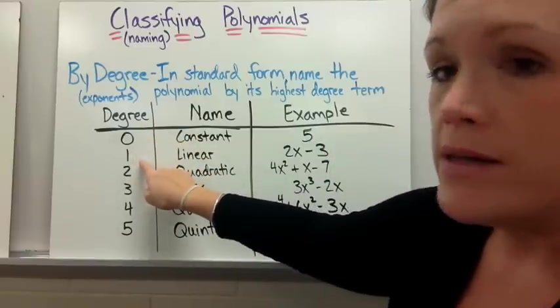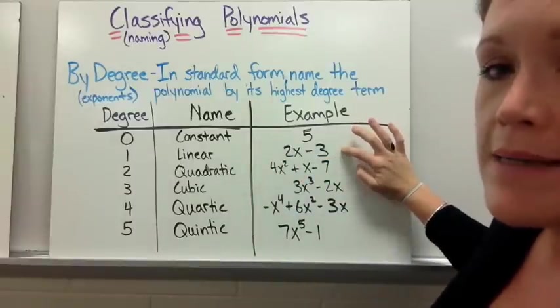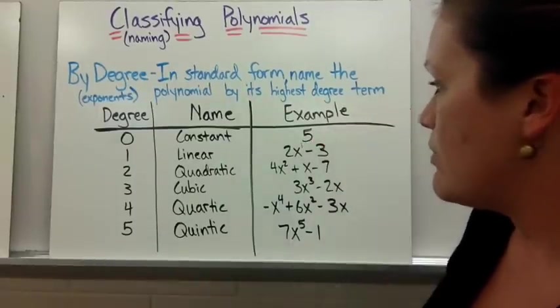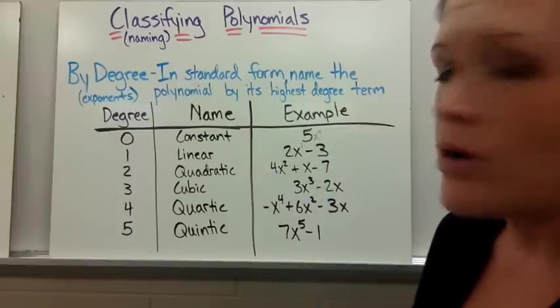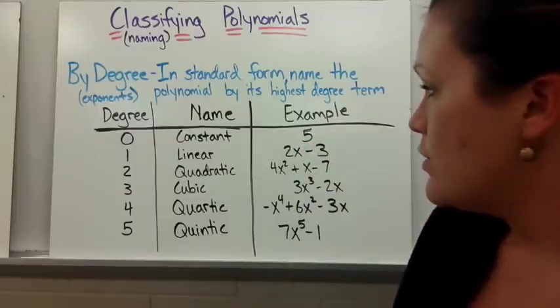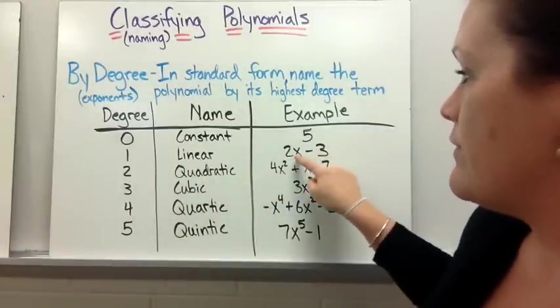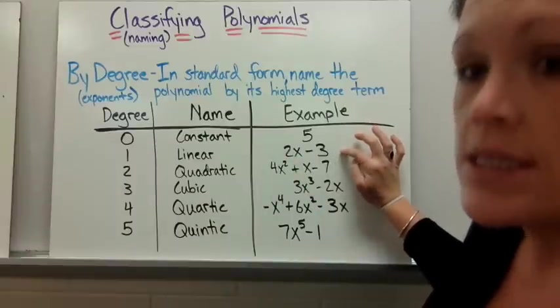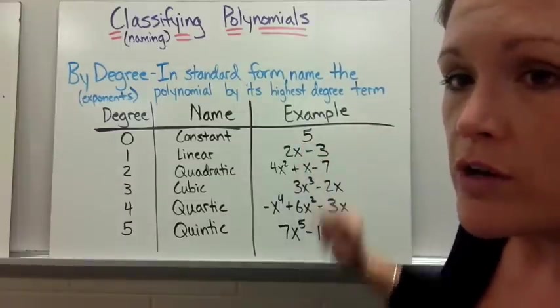If you have a degree of one then it's called a linear function. We have 2x minus three for example because that has an understood one. If there was a variable with our five it would have had to have a zero, but we don't write those in math because they're understood to be there. Linear usually you can think of that as mx plus b form, but linear would also be there if it was just the 2x. Linear does not go with the fact that this is a binomial. It's linear because it has a highest degree of one. There's no other variable with a higher degree.